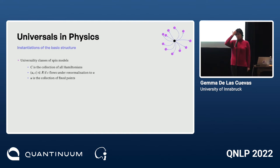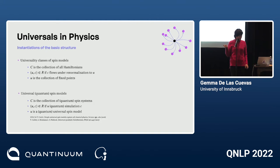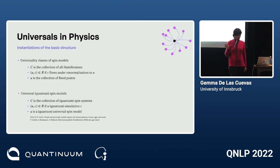Universality classes of spin models: C is the collection of all Hamiltonians, R is flowing under renormalization, and U is the collection of fixed points. For universal spin models in the classical or quantum case, C is the collection of quantum spin systems, R is a simulation relation, and U is the universal spin model.